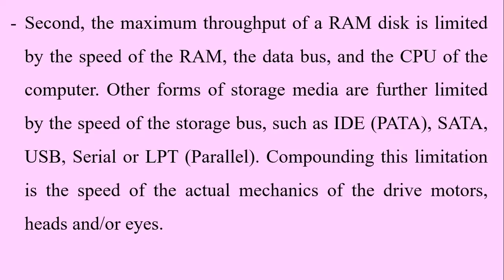Second, the maximum throughput of a RAM disk is limited by the speed of the RAM, the data bus, and the CPU of the computer. Other forms of storage media are further limited by the speed of the storage bus — such as IDE or PATA, SATA, USB, or parallel (LPT) — as well as the speed of the actual mechanics of the drive motors.